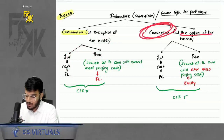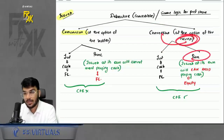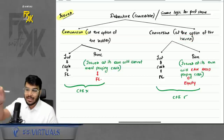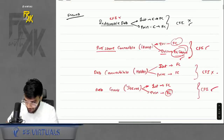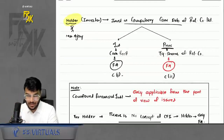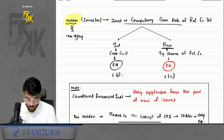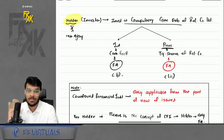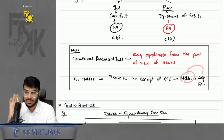One important conceptual point: the concept of CFI applies only from the point of view of the issuer, not the holder. For the holder (investor), whether they receive cash or equity shares of that company, both are financial assets. So CFI is only an issuer-side concept; for the holder, it is always just a financial asset.